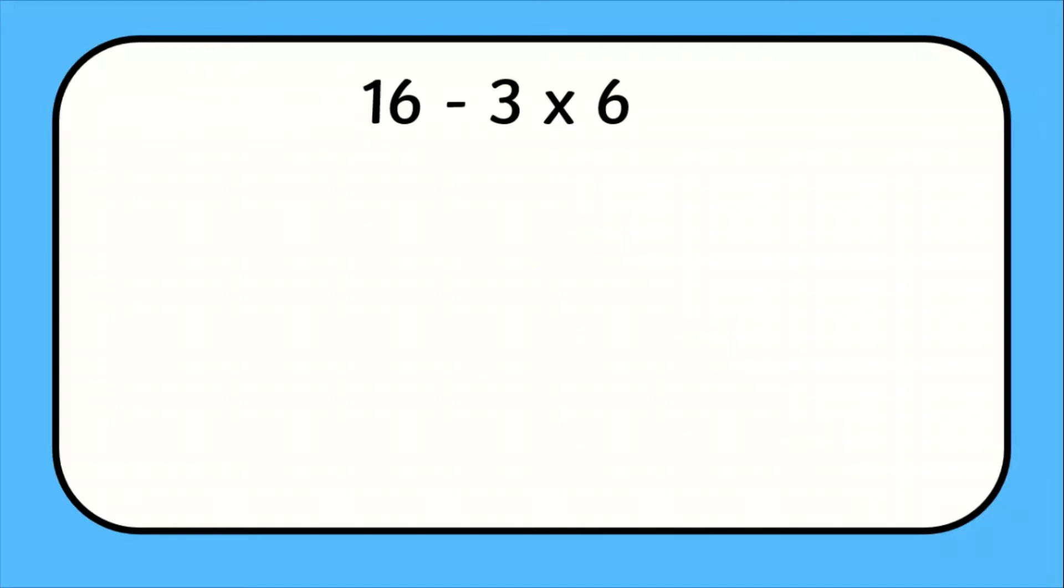But why is this important? Let's see. Here we have a calculation with a mixture of operations. There is a subtraction and a multiplication symbol. This means we have two different possible answers. Option A: We do 16 subtract 3 and get 13. Then we multiply 13 by 6 and get 78 as our final answer.